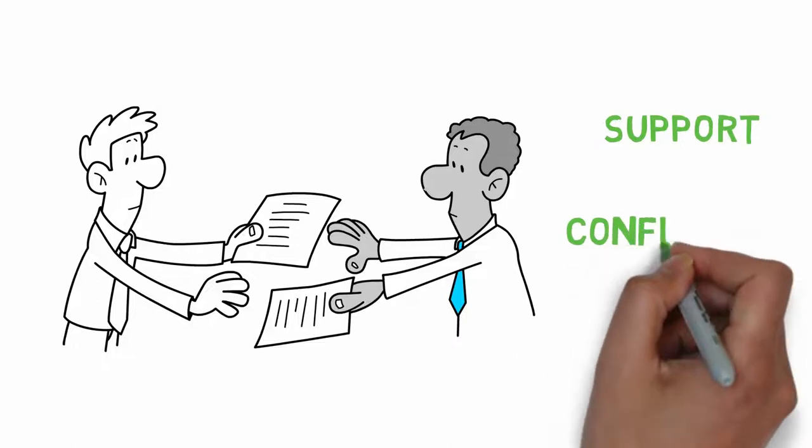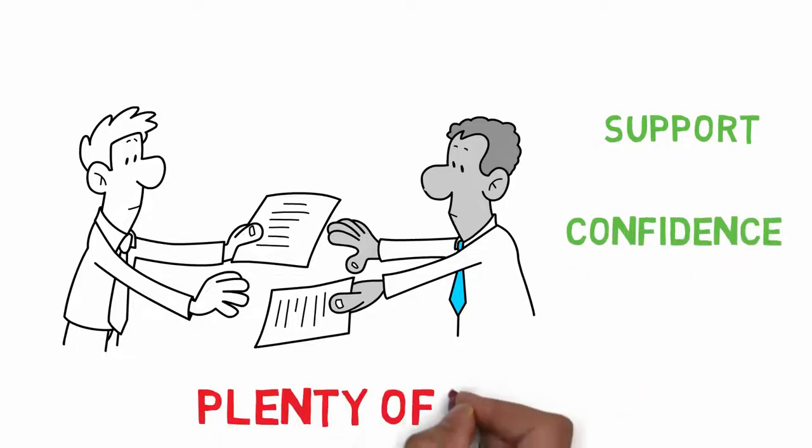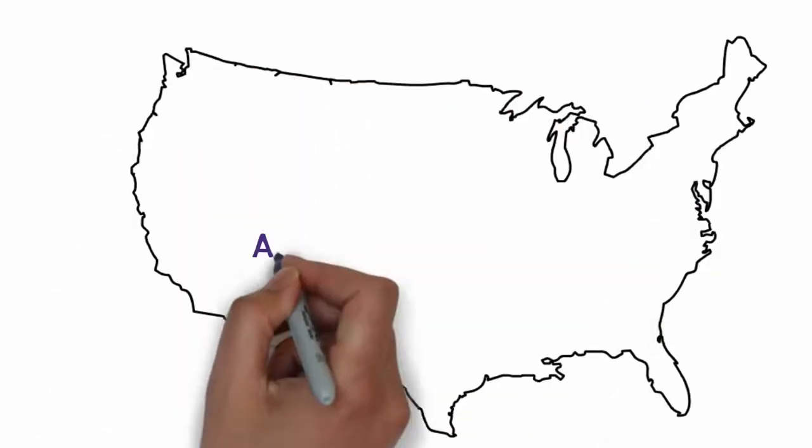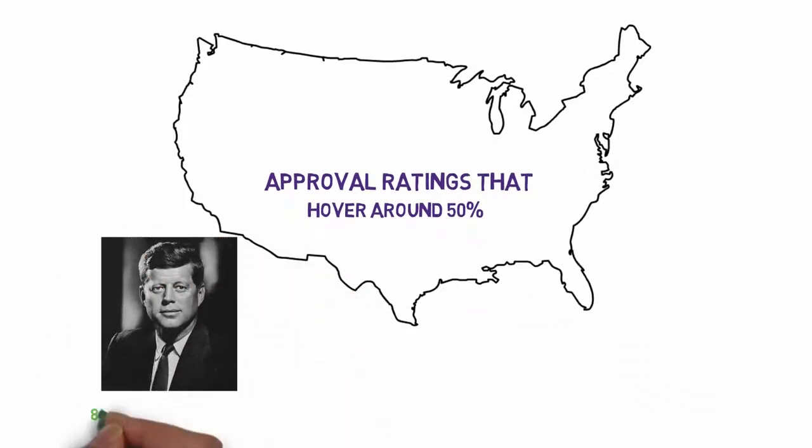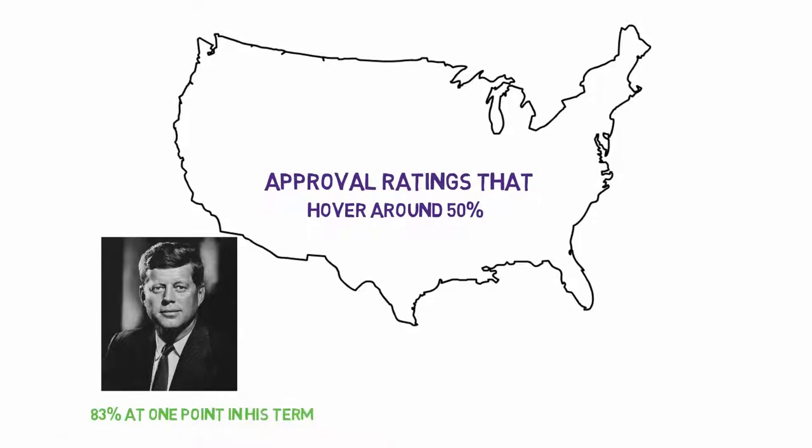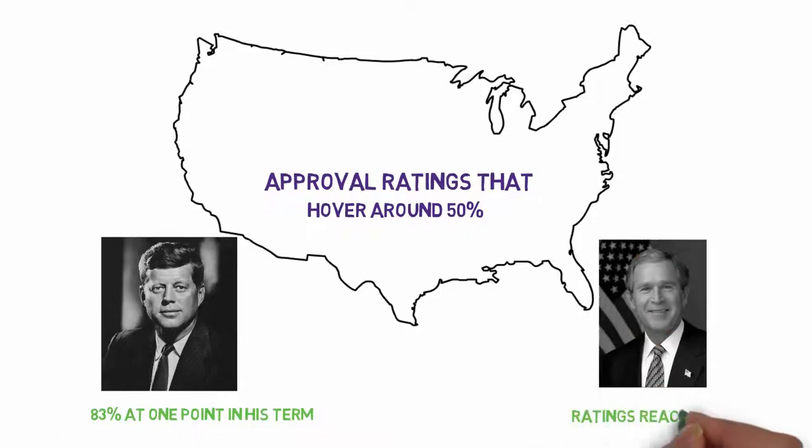Then there's the issue of support and confidence. I mean, sure, there will always be plenty of haters, but in the United States at least, presidents typically have approval ratings that hover around 50%. JFK had an approval rating as high as 83% at one point in his term, and George W. Bush's ratings reached 89%.